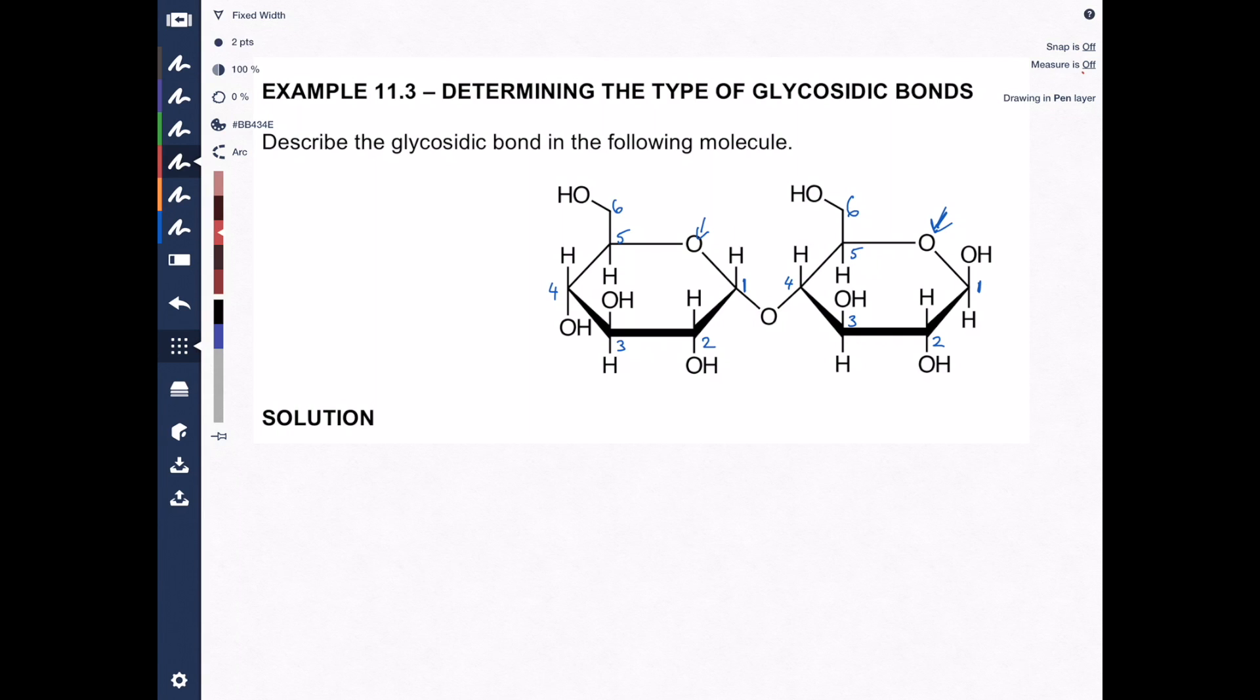Now we want to go ahead and circle the glycosidic bond. A lot of times on exams, I'll ask students to, I'll show them a disaccharide, and I'll say, go ahead and circle the glycosidic bond. So right here, that's the glycosidic bond.